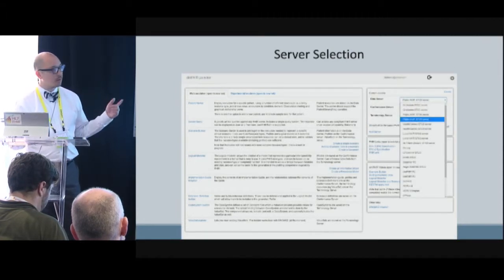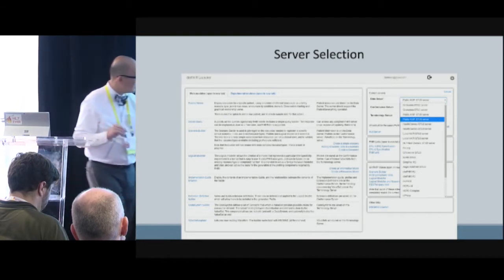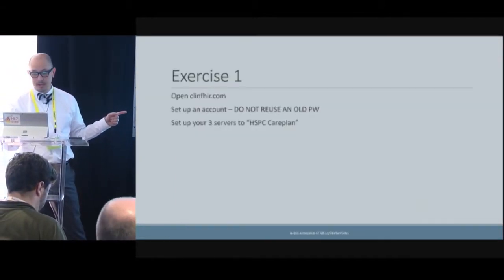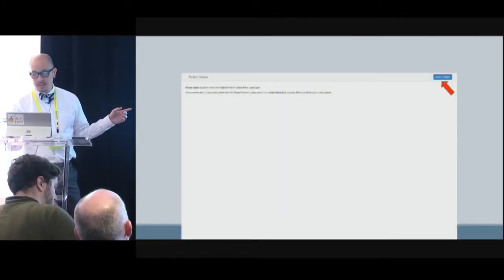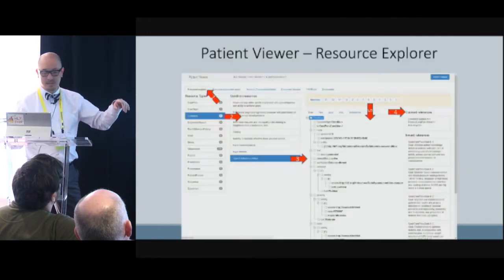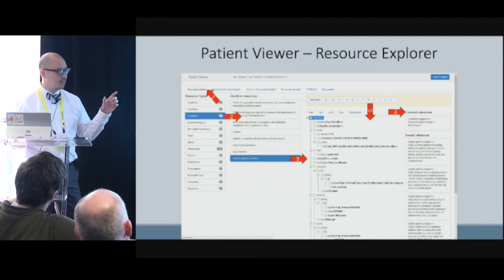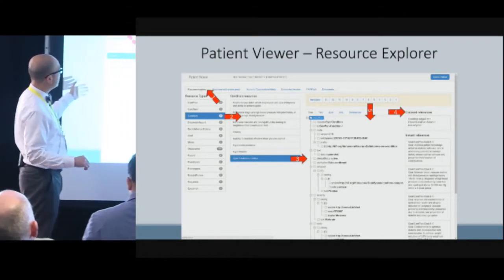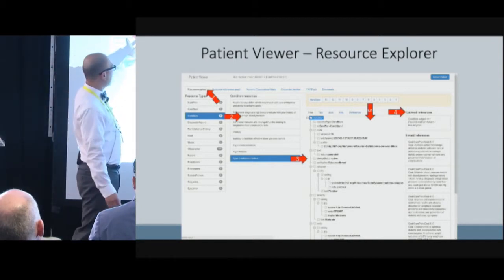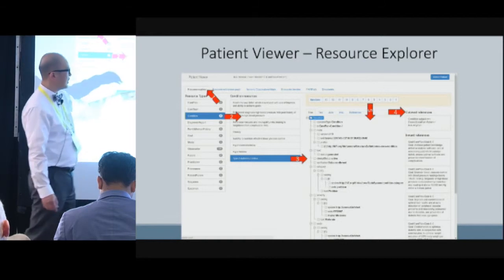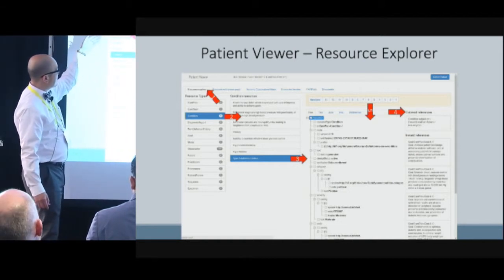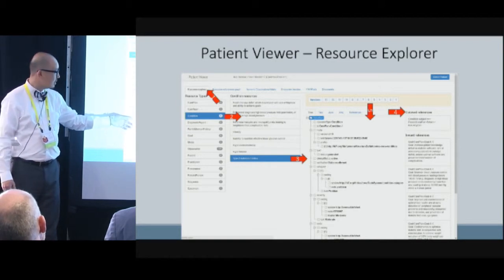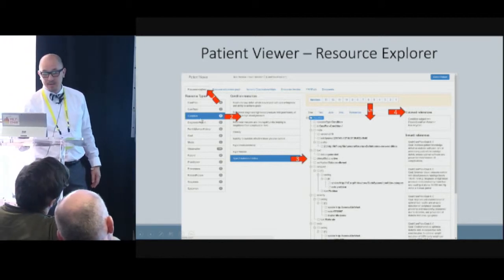As you work through the example, you'll select the server. I actually recommend folks use the HSPC care plan server, because there are some really good patients on it. So I'm going to select a patient — here it's Bob Anyman, but in your example you're going to look at the server and find a patient named Betsy that has a ton of really good resources. Once you've selected the patient, you'll get to the Patient Viewer screen, and there are two parts you want to use.